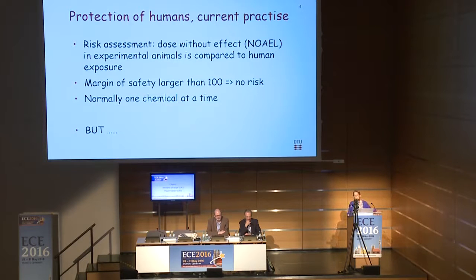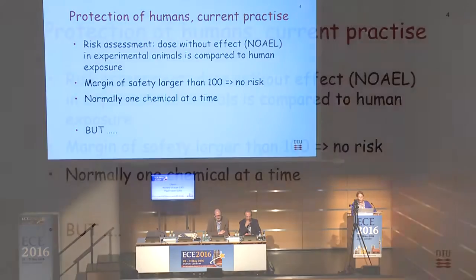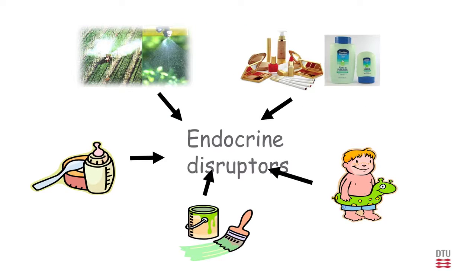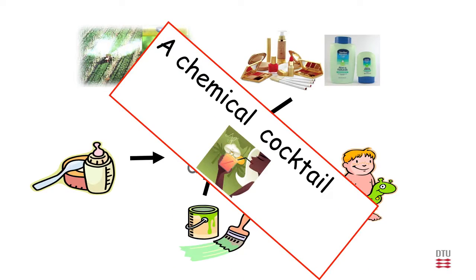We wondered how people are protected against endocrine disruptors. The current practice is to do a risk assessment based on animal studies: you decide on a dose without an effect — a NOAEL — and compare that to human exposure. If the margin of safety is larger than 100, the conclusion is there is no risk, i.e., this is a safe level for humans. This factor of 100 accounts for toxicokinetic differences between rats and humans and other sensitivities. This risk assessment is done for one chemical at a time, but people are not exposed to one chemical — they are exposed to a chemical cocktail.